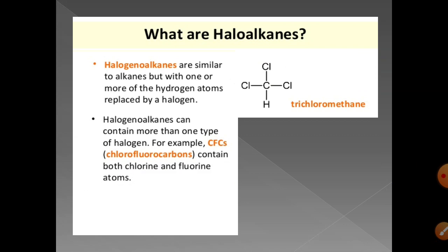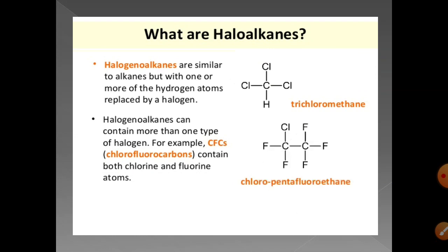Haloalkanes can contain more than one type of halogen. For example, in chlorofluorocarbons (CFCs), both chlorine and fluorine atoms are attached to the alkyl group.